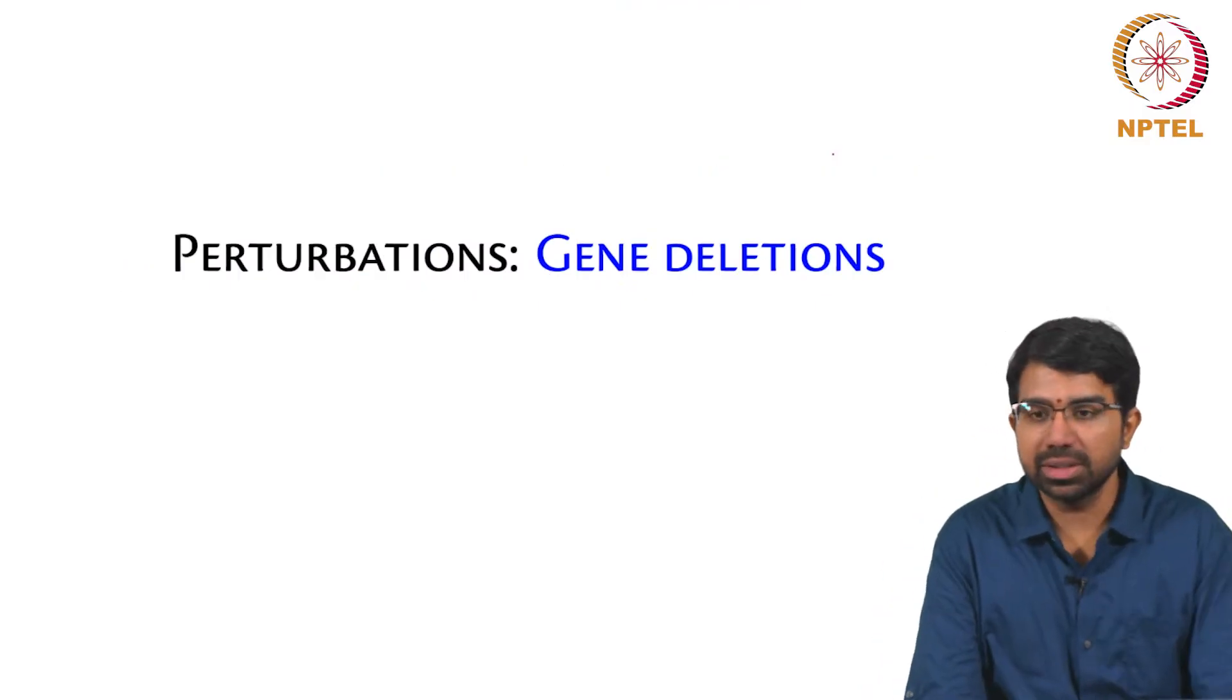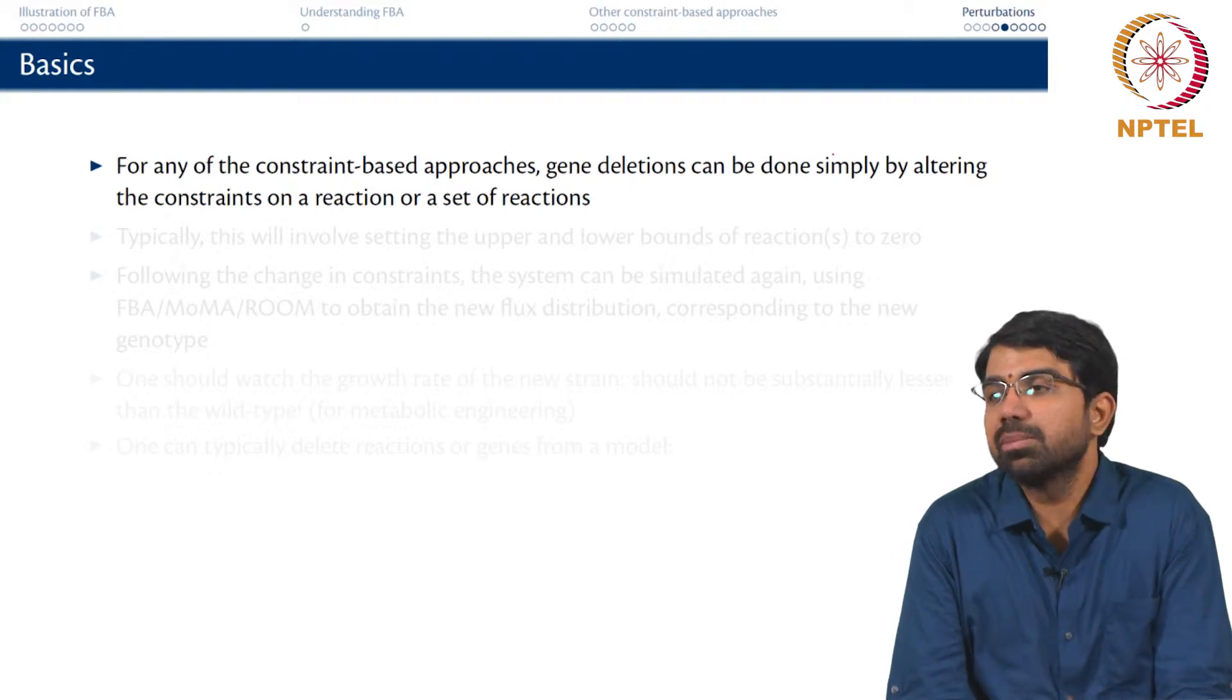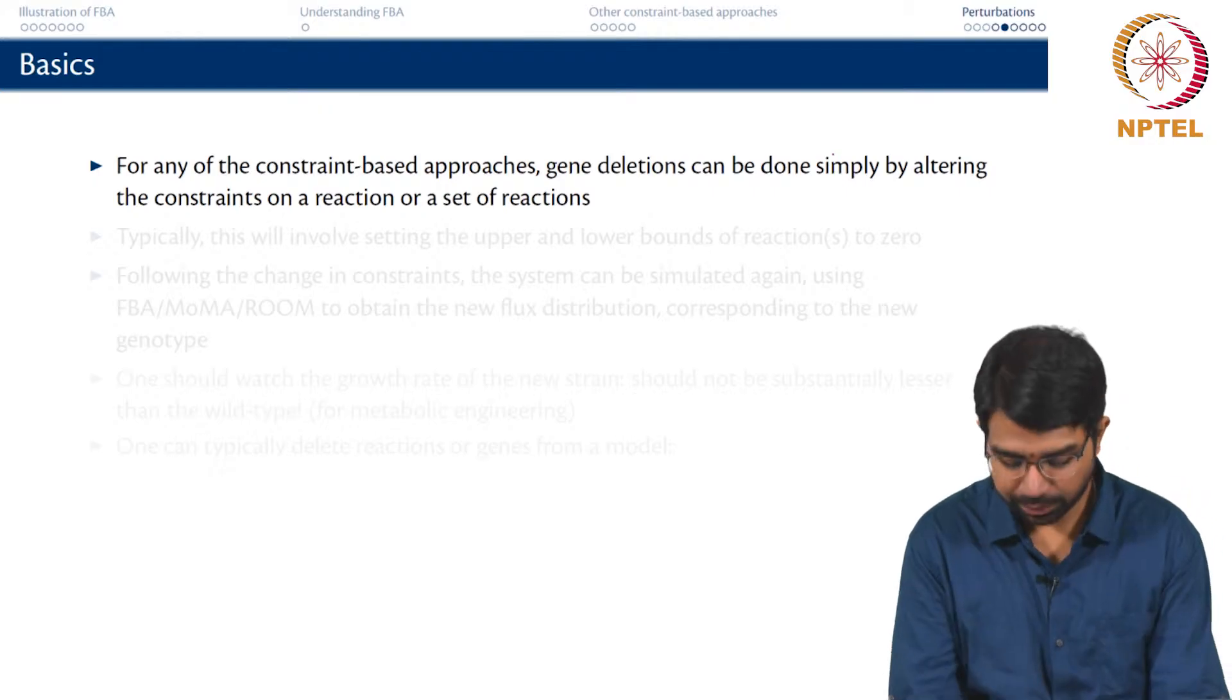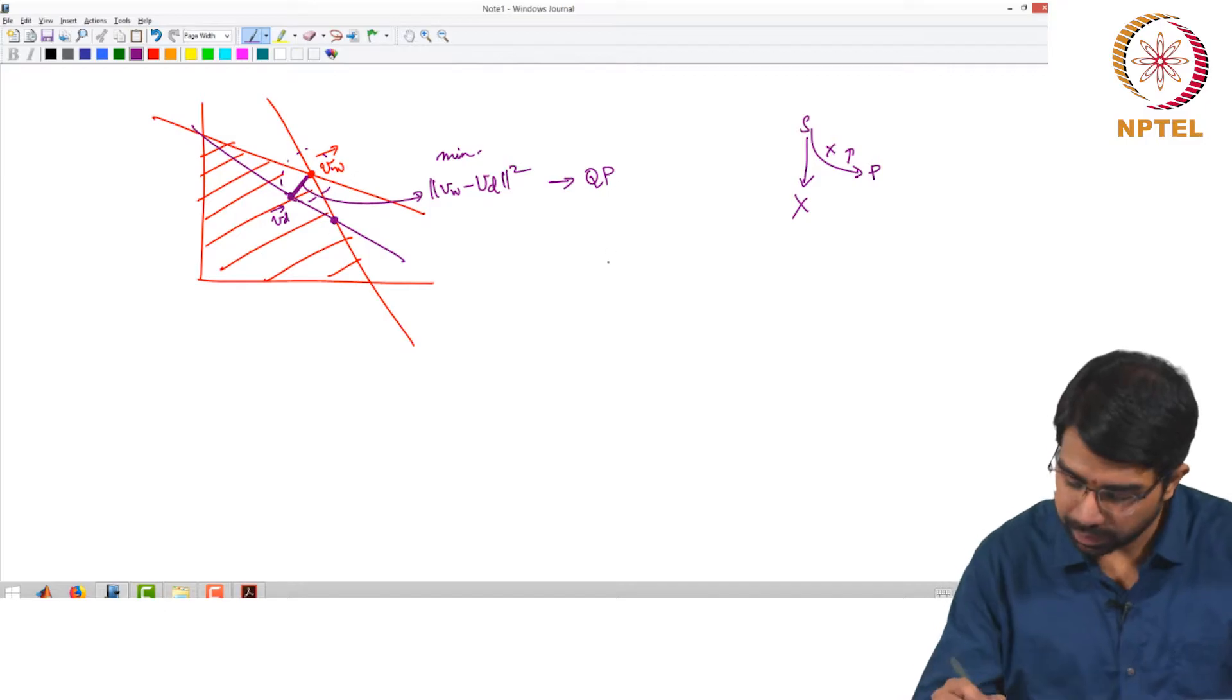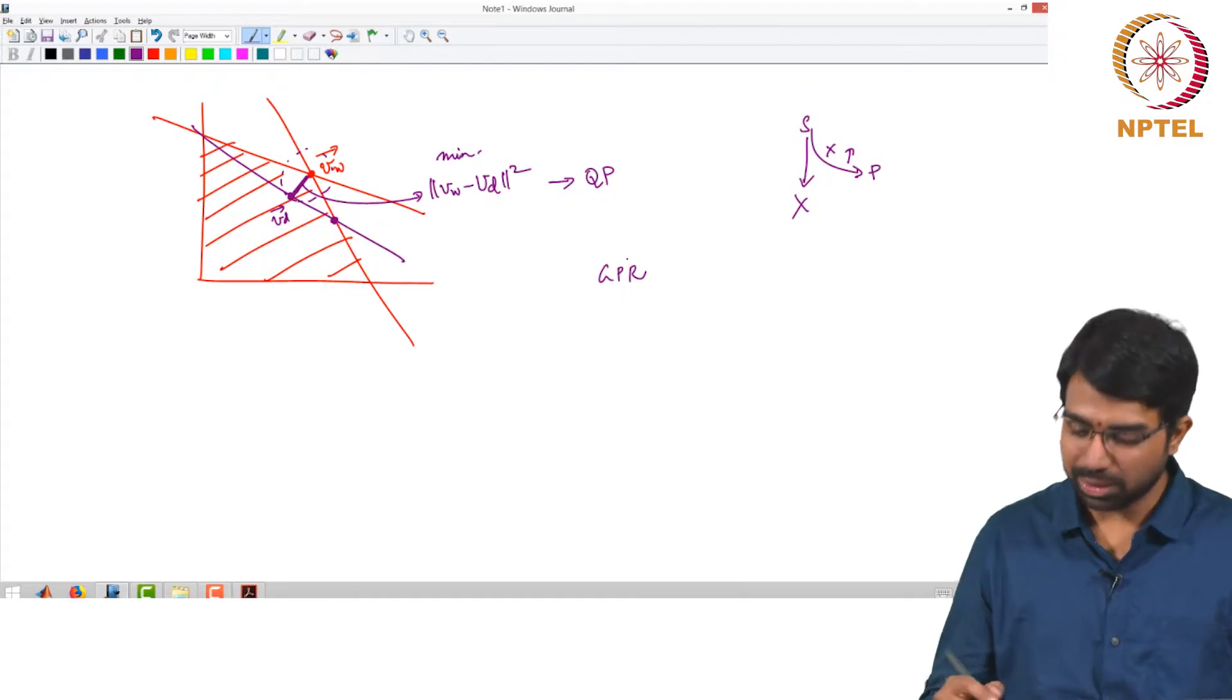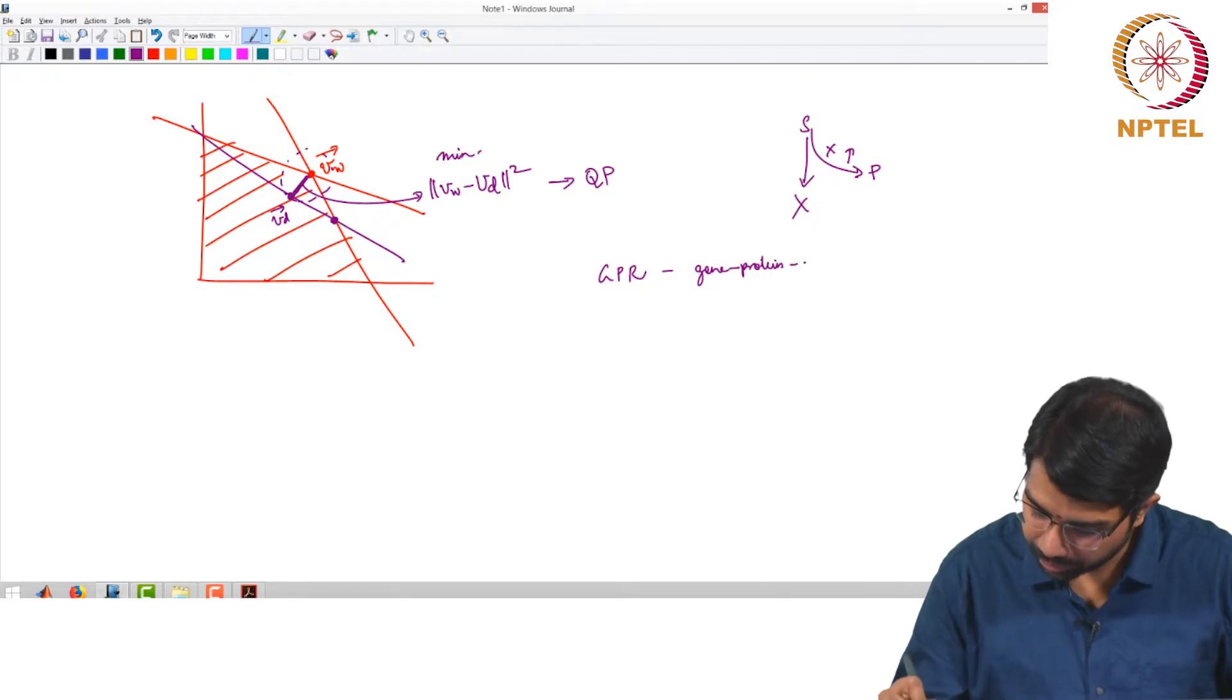Let us look at gene deletions. For any of the constraint-based approaches, gene deletions can be simply done by altering the constraints on a set of reactions. At this point it is important to recall what is a GPR - gene-protein-reaction associations.